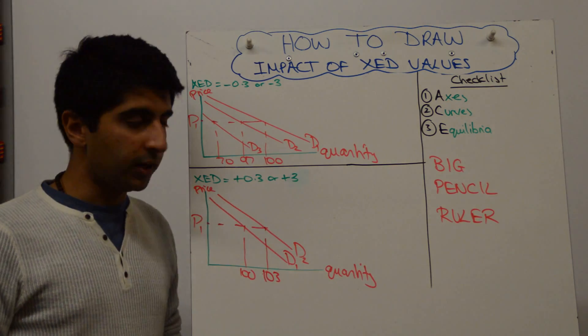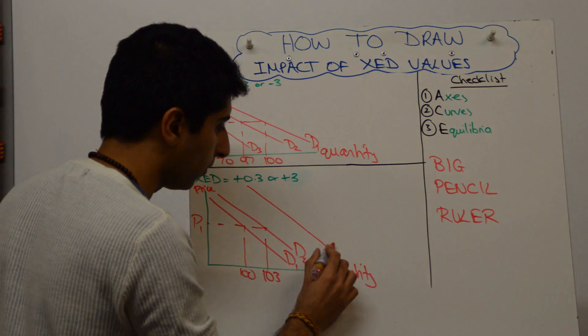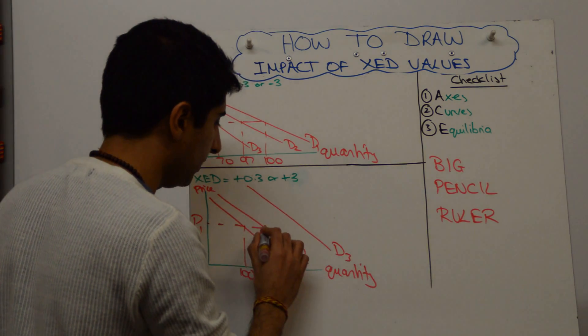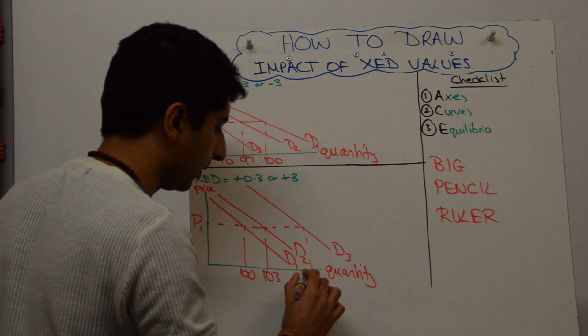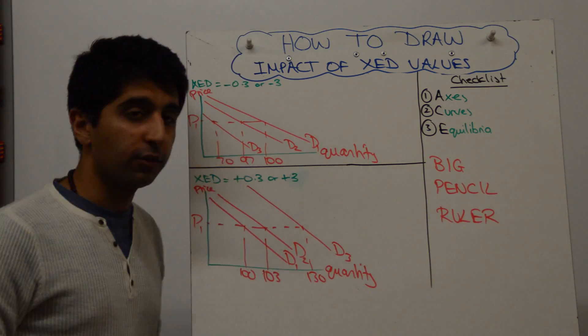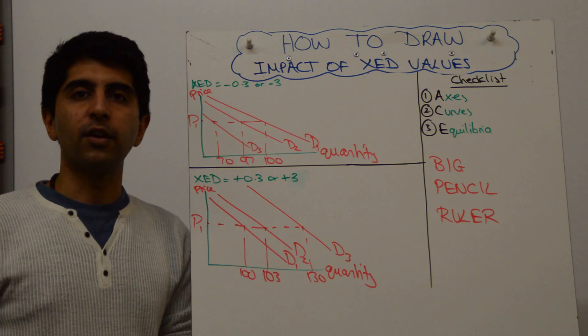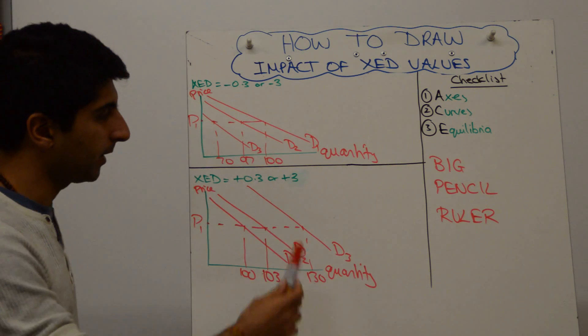Whereas if the figure was plus 3, you would shift demand much, much more to D3. And that would lead to increase to 130, that's a 30% increase, if the price of Nike trainers goes up by 10%.